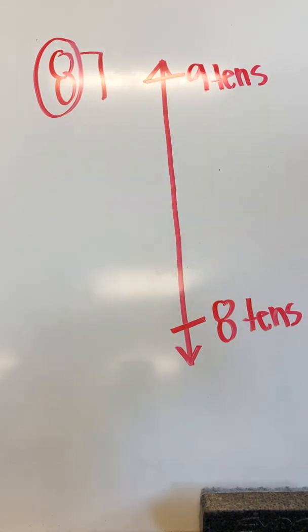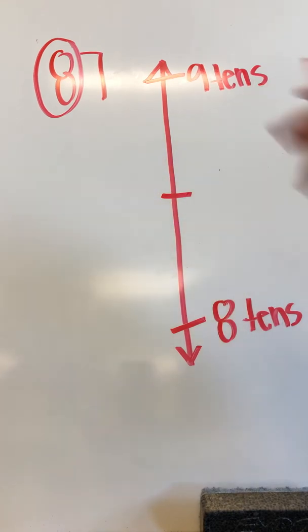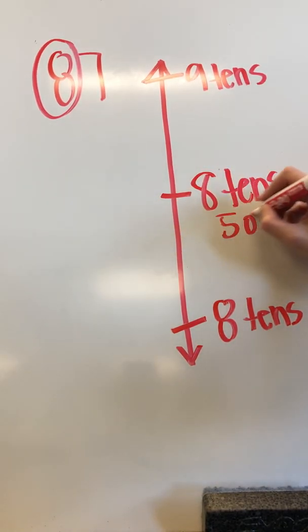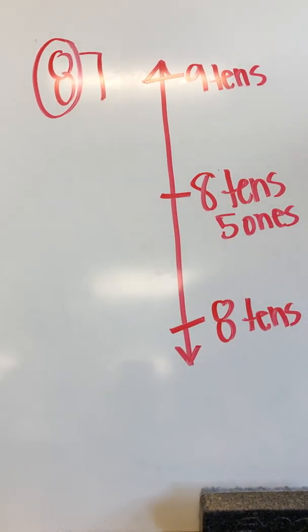Alright, now we have to find out the midpoint. The number that's in between these two tens. Go ahead and pause the video and write your midpoint. Did you figure it out? 8 tens, 5 ones. Which would be what number in standard form? 85.